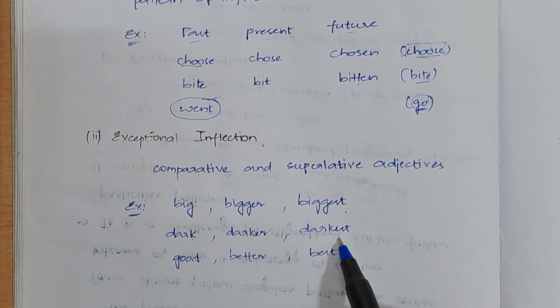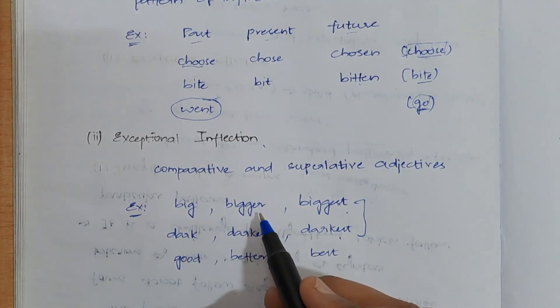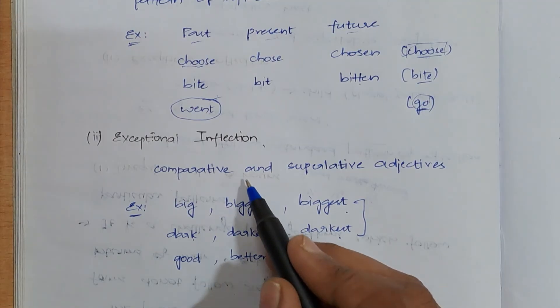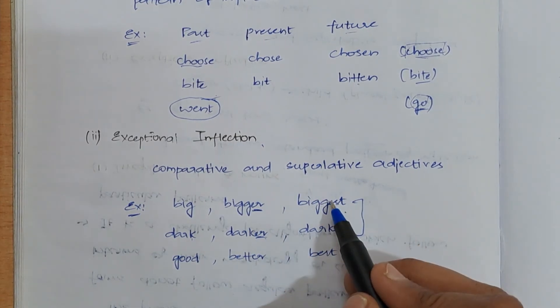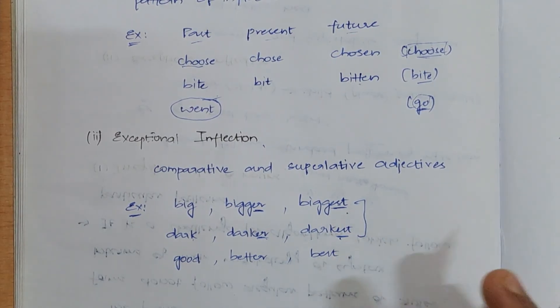Big, bigger, biggest. Dark, darker, darkest. In these two words, it is following a certain pattern, right? Whenever it is coming to comparative, it is adding 'er' at the last, and when it is coming to superlative, it will be adding 'est' at the last.